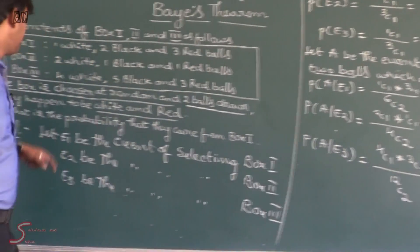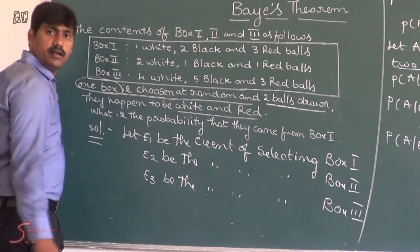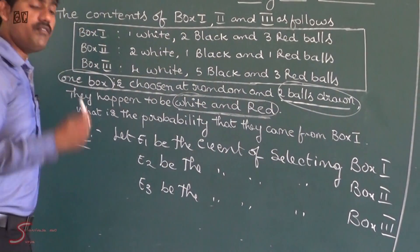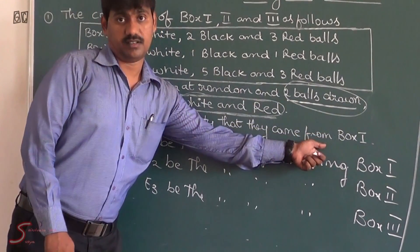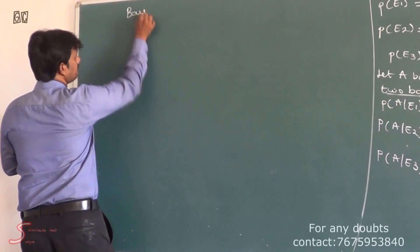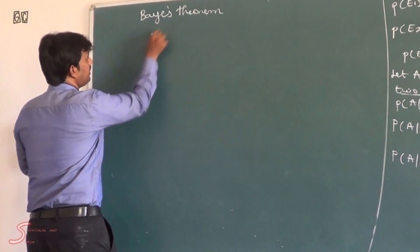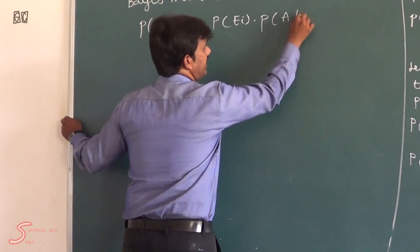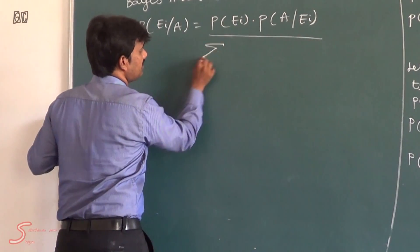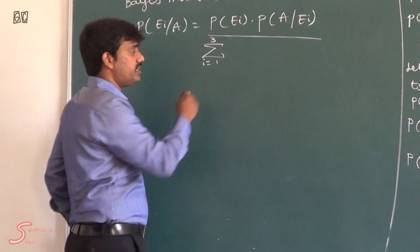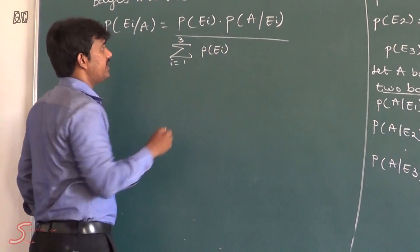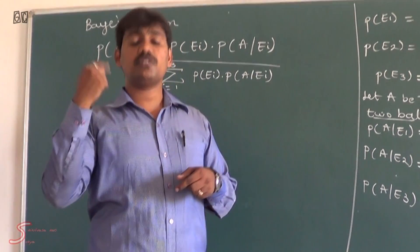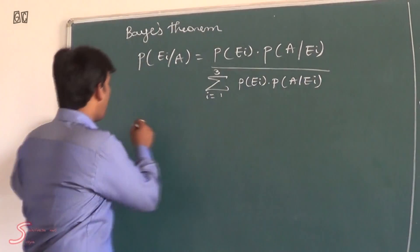Now we have to find what is the probability that the two drawn balls came from box 1, by using Bayes' theorem. The formula for Bayes' theorem is: P(Ei|A) = P(Ei) × P(A|Ei) divided by the summation from i=1 to n of P(Ei) × P(A|Ei), where n = 3 since we have 3 boxes. The required probability is P(E1|A).